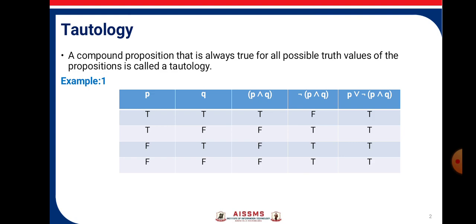Consider the example where P has the truth values T, T, F, F and Q has the truth values T, F, T, F. When we perform P and Q, we get T, F, F, F. When we perform the negation of P and Q, we get F, T, T, T. When we perform P or (negation of P and Q), we get T, T, T, T. As we get all the truth values as T, it is tautology.